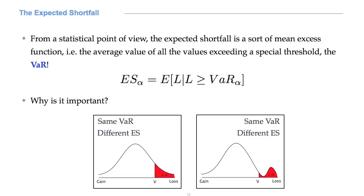Simple. Two loss distributions may have the same value of VaR alpha, but two different expected shortfalls. This is due to the fact that the shape of the right tail may be different. For example, if we compare the two pictures, we can expect the expected shortfall of the right-hand side distribution to be larger, given that this distribution assigns a higher probability to larger loss values.